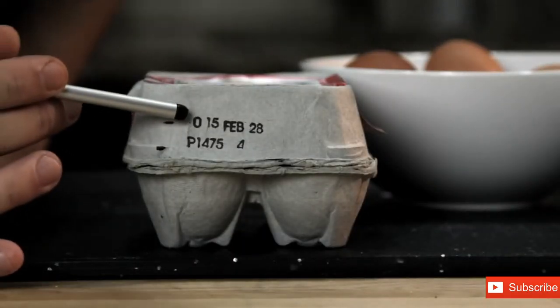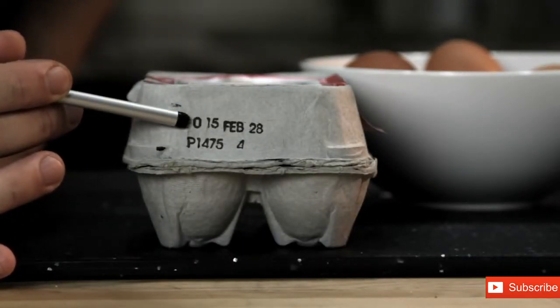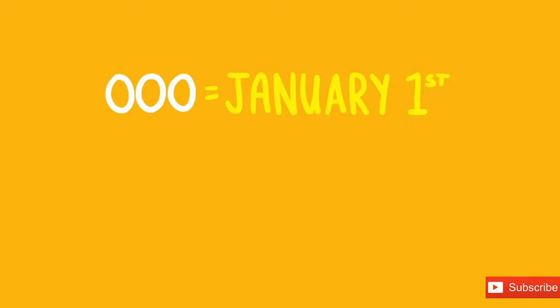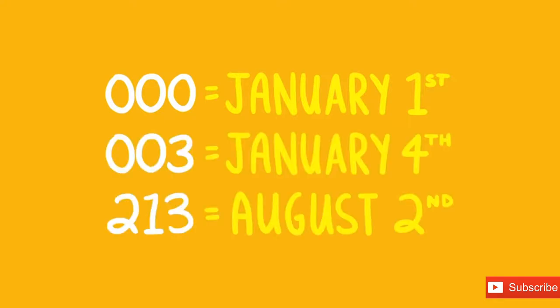The first is to check something called the Julian date. As long as it's packed in the US, every carton of eggs has a number between 000 and 365 on it, and that number corresponds to the day on which the egg was cleaned and packed. So a number of 001 would mean January 1st, 003 would mean January 4th, and so on. All you really need to know is that the higher the number, the fresher the egg.